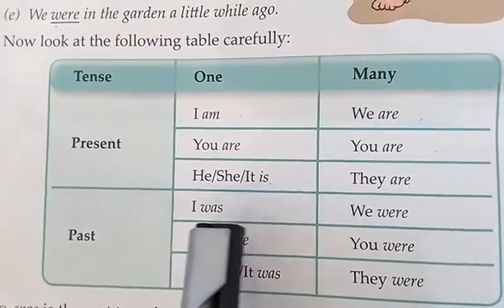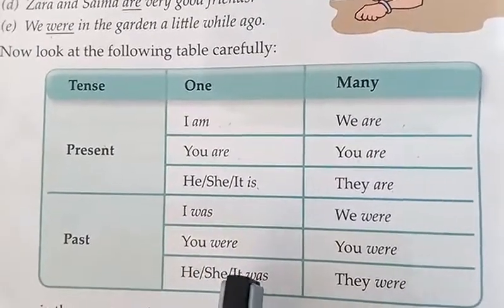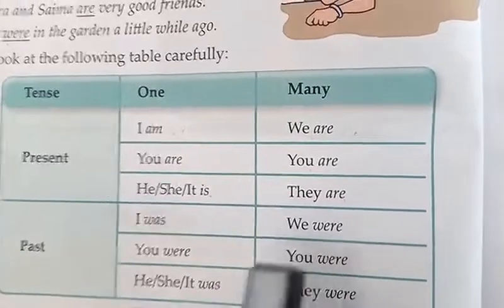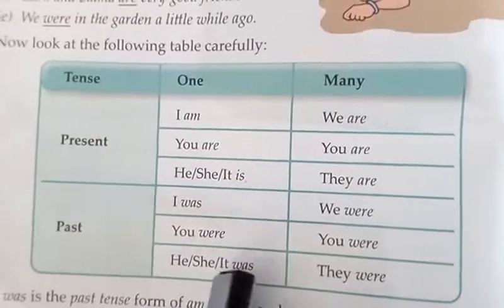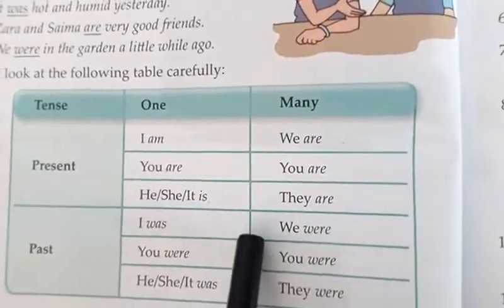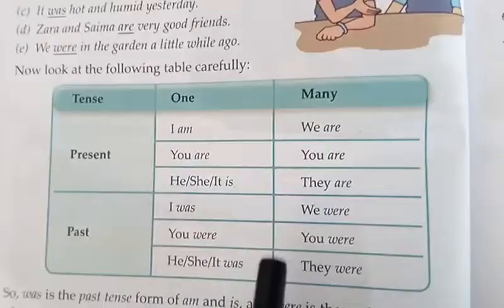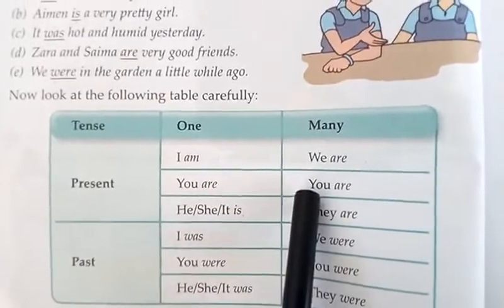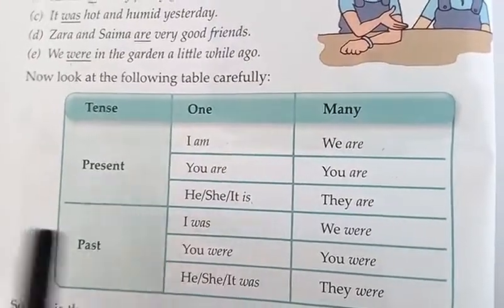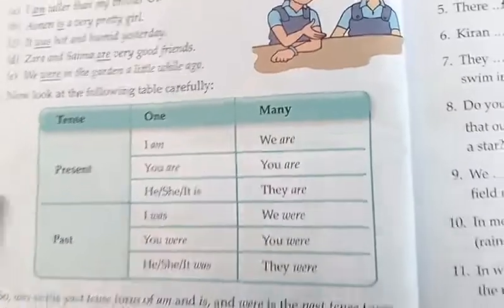Past tense میں: I کے ساتھ was، you کے ساتھ were، he/she/it کے ساتھ was لگے گا — present میں is اور past میں was۔ Many کے ساتھ were، اور ایک چیز کے ساتھ was۔ You کے ساتھ past میں بھی were — one اور many دونوں میں you were۔ They بہت سارے لوگوں کو define کرتا ہے، تو they کے ساتھ were۔